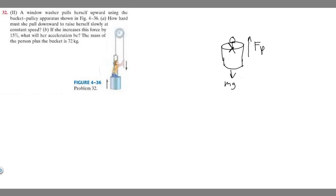Notice how the apparatus is set up. If they pull down on this rope, it's going to cause them to go upwards. There's also the force of this thing pulling the bucket and them up. So in reality, there's going to be another F sub P — this pulling them up. These forces are going to be the exact same. We've got one force from them pulling themselves up, and the other one is from the rope and the apparatus pulling the bucket up from under her.